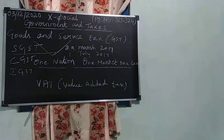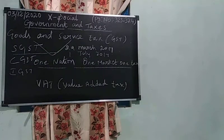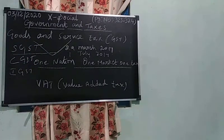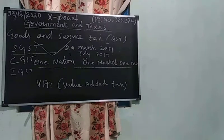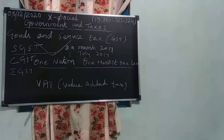SGST covers purchase tax, entertainment tax, luxury tax, and lottery tax. CGST covers central excise duty, service duty, and countervailing duty. The four major GST rates are 5%, 12%, 18%, and 28%.